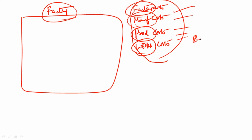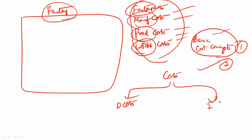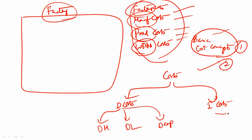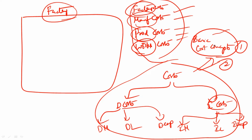I hope you've watched basic cost concepts part 1 and part 2. In those videos, I explained that based on relationship, costs can be classified into two categories: direct cost and indirect cost. Direct cost includes direct material, direct labor, and direct expenses. Indirect cost includes indirect material, indirect labor, and indirect expenses. Please watch those videos before this one.